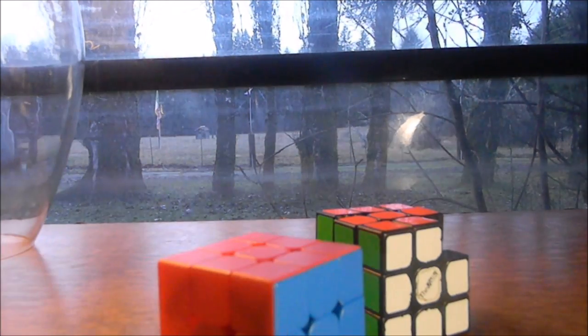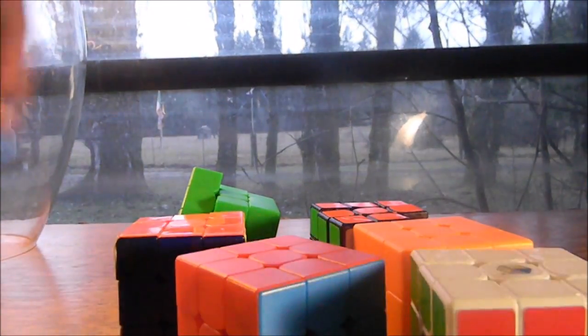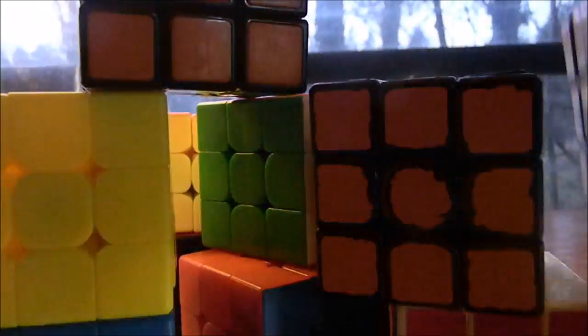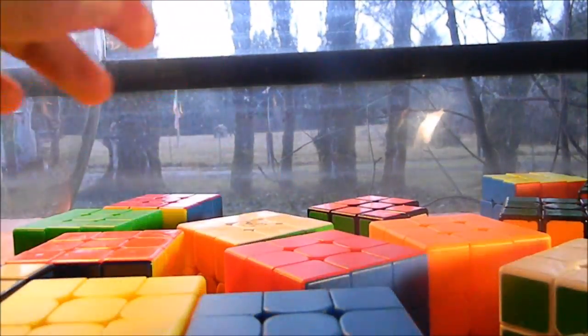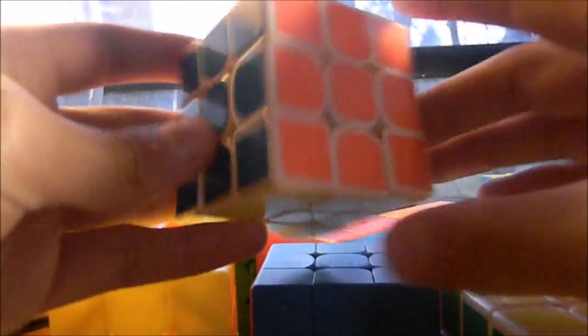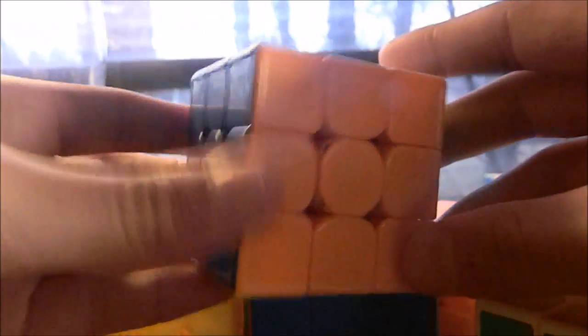So guys we're here with 3x3. First cube we have here is the MF3RS2 in white. Then we have the Moyu DTS3M angstrom.